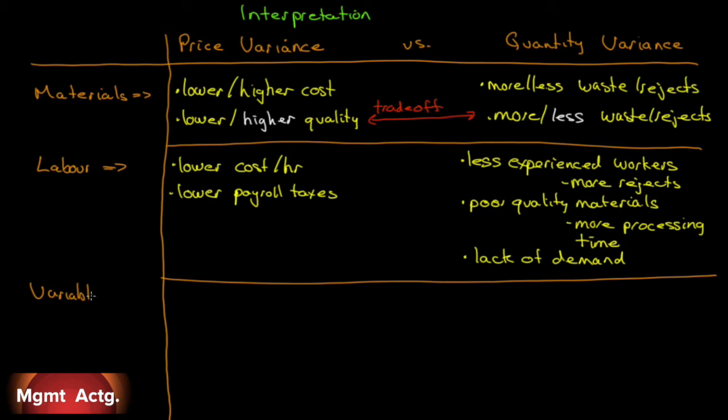For variable overhead, how do we get price variances? The same way with the materials. Higher or lower costs. It might be a terribly cold winter, and your heating expense is going to be higher than what the standard was. It's not a standard winter, so that's fully explainable, but it's still a variance. More or less of the quantity used.